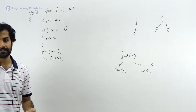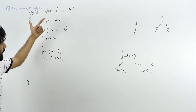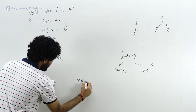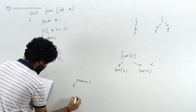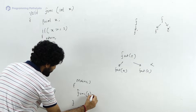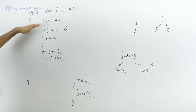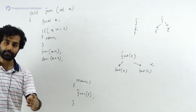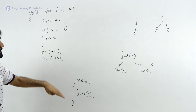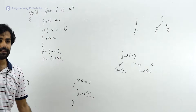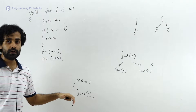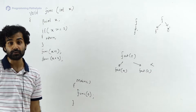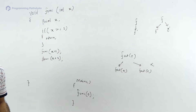I want you to pause this video for at least two to five minutes, take pen and paper, and predict what the output of this code should be if the initial call from main is func(0). Then try running it on your computer and check whether your expected output matches the actual output.